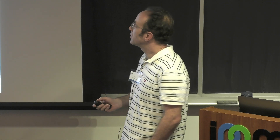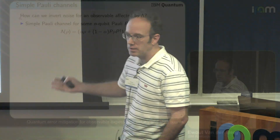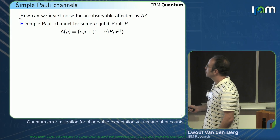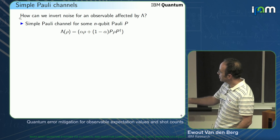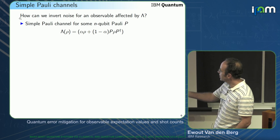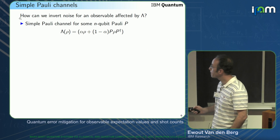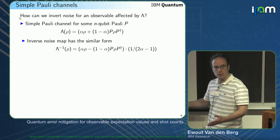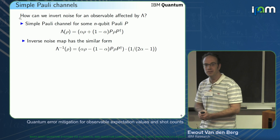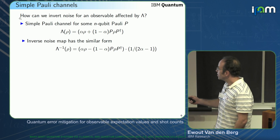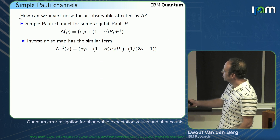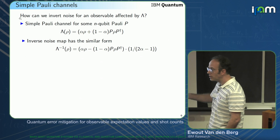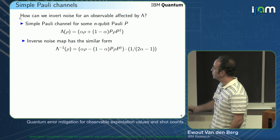Suppose we have a Pauli channel — how would we invert it? Let's start with a very simple Pauli channel with just two terms: one is the identity and (1 − α) times some Pauli P. You can work out that the inverse noise map has a similar form: α times ρ minus (1 − α) times the same Pauli, plus a scaling factor. Any questions yet? No, okay.